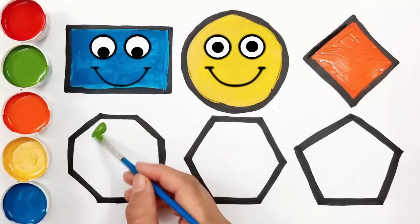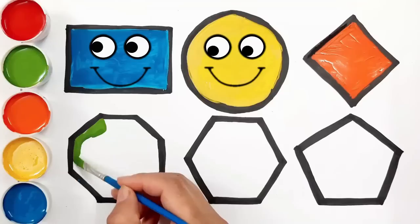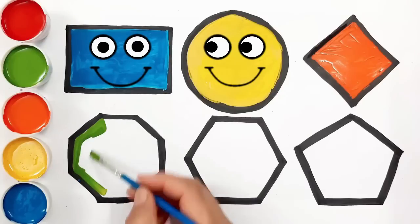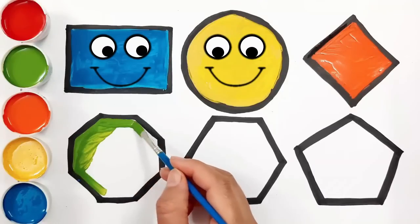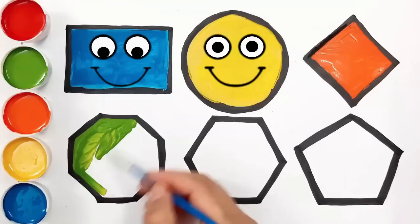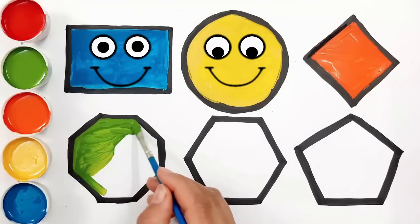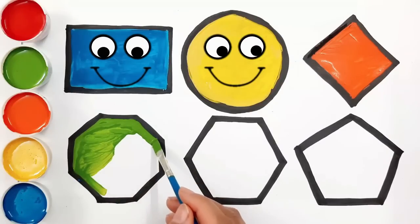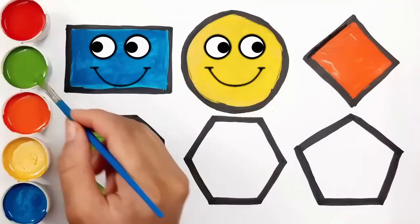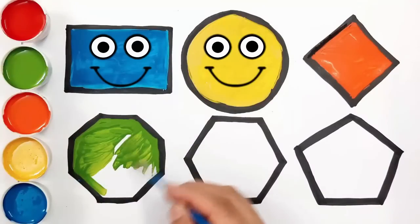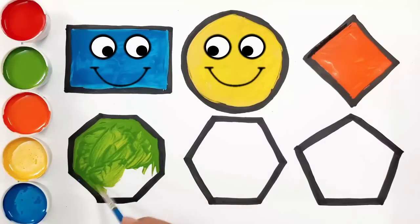Now let's paint octagon with green color. What color is this? Green. Yes, it's a green color. Green color octagon. What shape is this? Octagon. What color is this? Green.